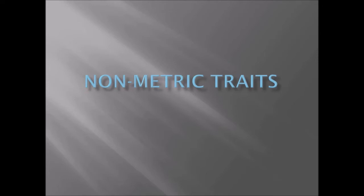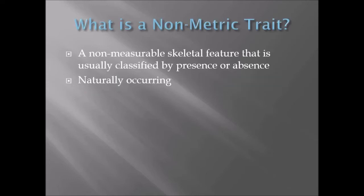Fundamentally, non-metric traits are traits that are either there or they're not. They're not necessarily measurable - there isn't more or less of any of these. They're either there or they're not. So non-metric traits are non-measurable skeletal features that are naturally occurring and classified by presence or absence. If an individual has one of these traits, it can help us determine who that person was.